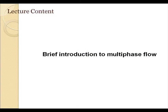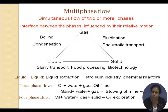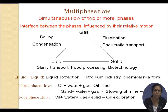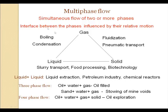In order to define multiphase flow, just the presence of two phases does not necessarily imply that it is multiphase flow. For example, flow through a packed bed is not multiphase flow, but flow in a fluidized bed is. Multiphase flow is defined as the simultaneous flow of two or more phases where the interface between the phases is influenced by their relative motion. This particular phrase regarding the interface is very important because it differentiates single-phase and multiphase flows.